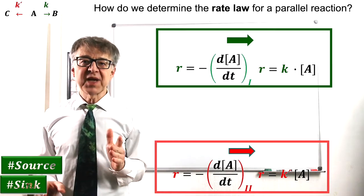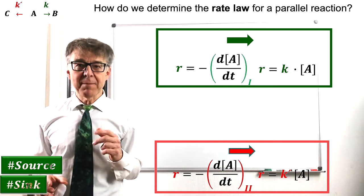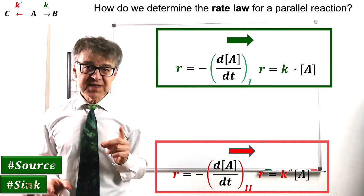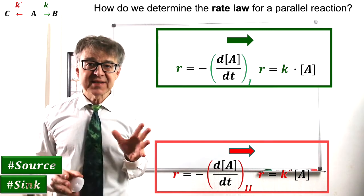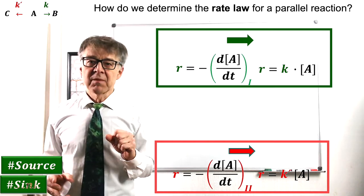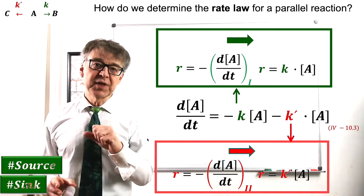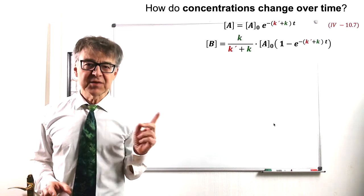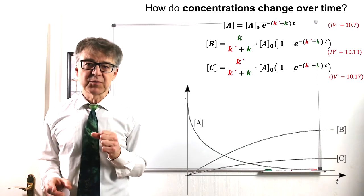As usual, we obtain the kinetics of the overall reaction by making the balance of the two elementary reactions. In this case, both the green and the red reaction act as sinks for the reactant A. Therefore, the rate law shows two negative terms. By integrating the law, we get the concentration-time relationship of both products.